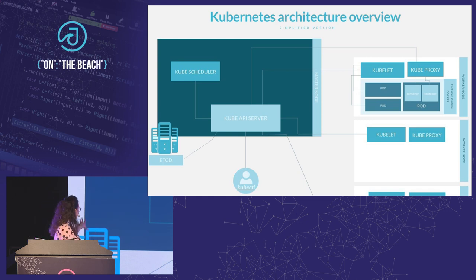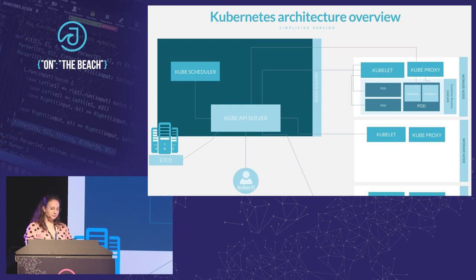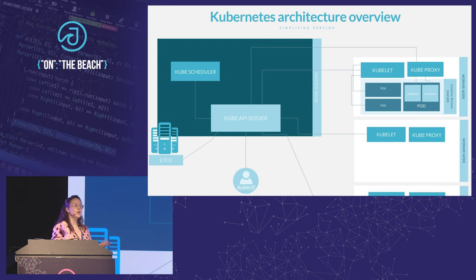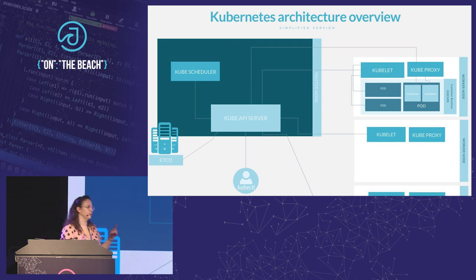Next up, we have etcd, which can live on the master node — it depends. It's a consistent and highly available key data store, and it's basically where all the Kubernetes cluster data resides. So the information about the pods, the number of resources — everything lives in etcd. That can be multiple etcd instances to have it highly available.